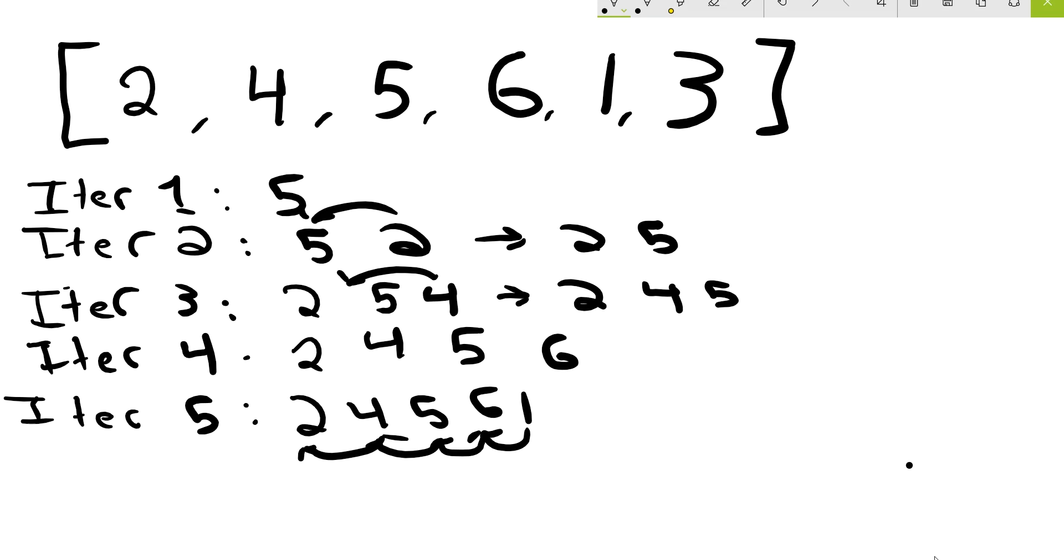Or if 1 is the smallest number, we just swap it all the way to the front of the list. So this will become 1, 2, 4, 5, 6. Alright, so we can update our chart to show this. So we now have 1, 2, 4, 5, 6.